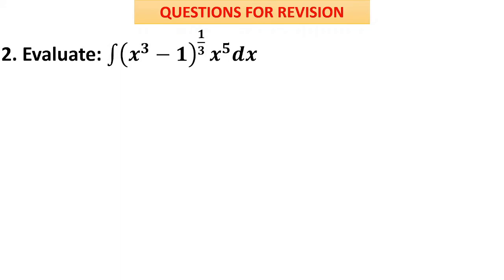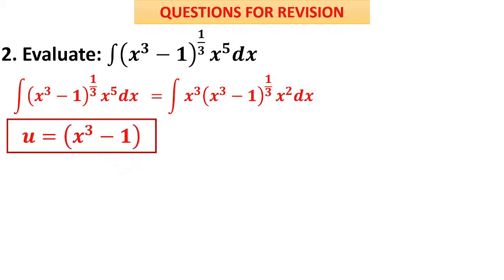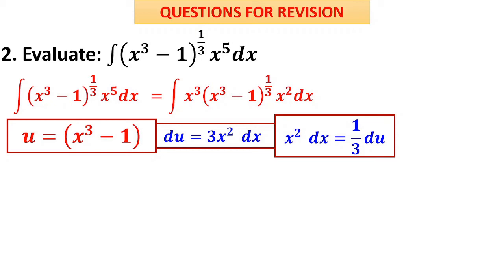Question 2: ∫x⁵ · (x³ − 1)^(1/3) dx. Sometimes you do not directly see the derivative of a function inside the integrand. Here, the differentiation of x³ is 3x², but x⁵ is given. We write x⁵ as x³ · x², so that we can substitute u = x³ − 1. Then du = 3x² dx, giving x² dx = du/3. Since x³ = u + 1, the factor x³ is replaced by (u + 1), and (x³ − 1)^(1/3) becomes u^(1/3).